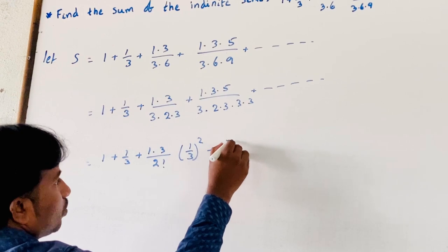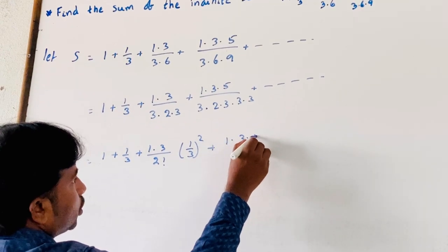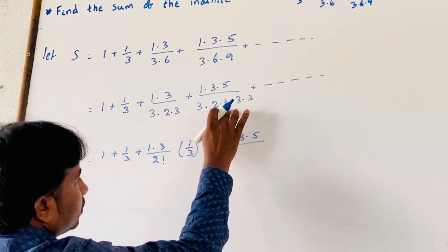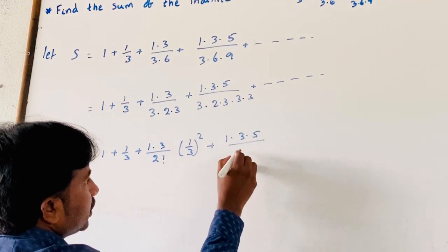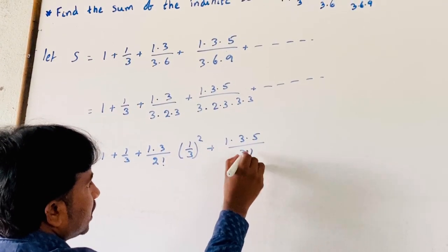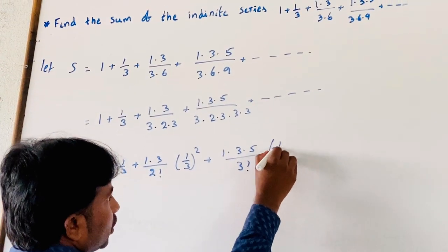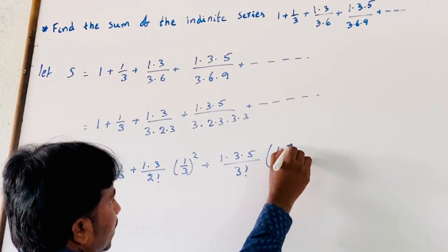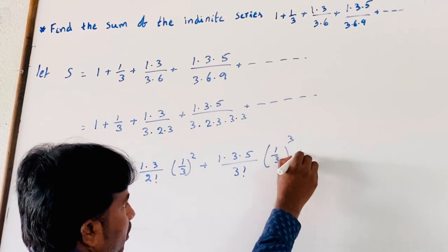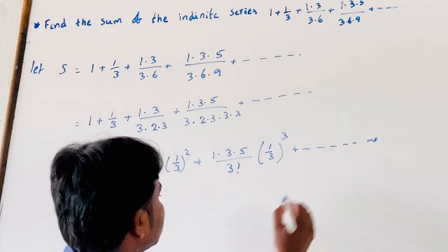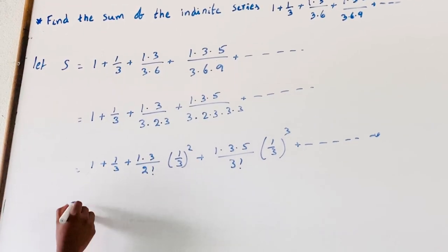Plus (1·2·3)/(3! · 3³), meaning (1/3) all cubed, and so on to infinity.